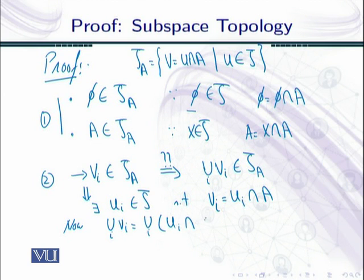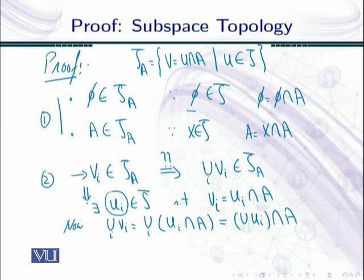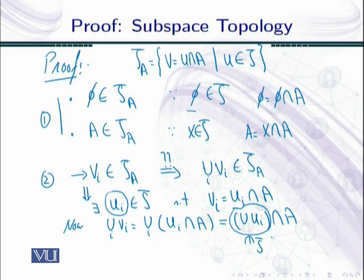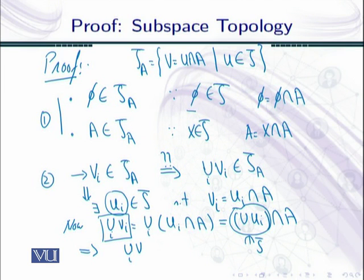Taking the union over all V_i: ∪V_i = ∪(U_i∩A) = (∪U_i)∩A. Now because each U_i is an element of τ and τ is a topology on X, the union ∪U_i is also an element of τ. So (∪U_i)∩A is an element of τ_A. This completes the proof of the second condition.